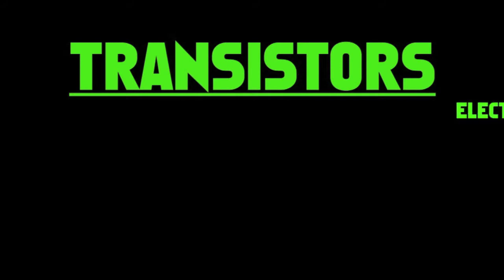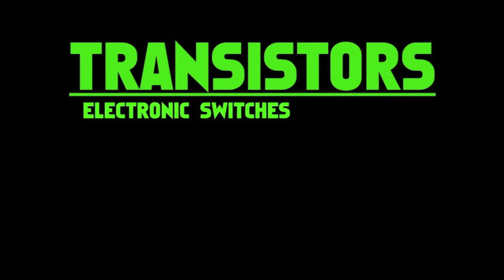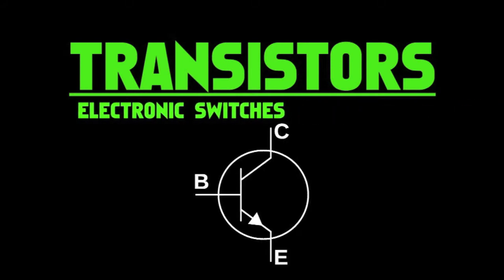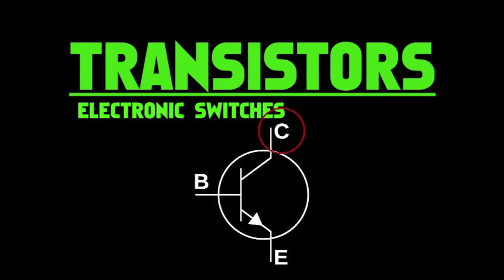Transistors are like electronic switches. A transistor has three connections: the base, the collector, and the emitter. For a transistor to allow a current to go out of the emitter, the base needs to have a voltage applied to it. This will make the semiconductor conduct so electrons can flow across it.